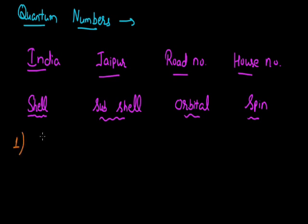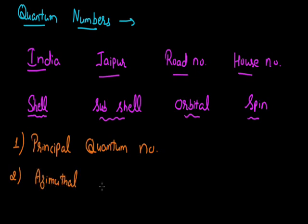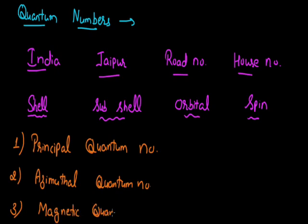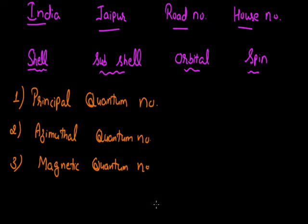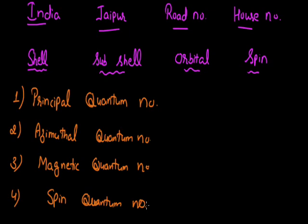The very first quantum number, which tells us about the shell, is termed as the principal quantum number. The next quantum number, which indicates the subshell, is termed as the azimuthal quantum number. The information about the orbital is given by the magnetic quantum number. And the fourth quantum number, the spin quantum number, tells us whether an electron rotates in the clockwise or anticlockwise direction. These are the four types of quantum numbers and we will be learning about them in detail.